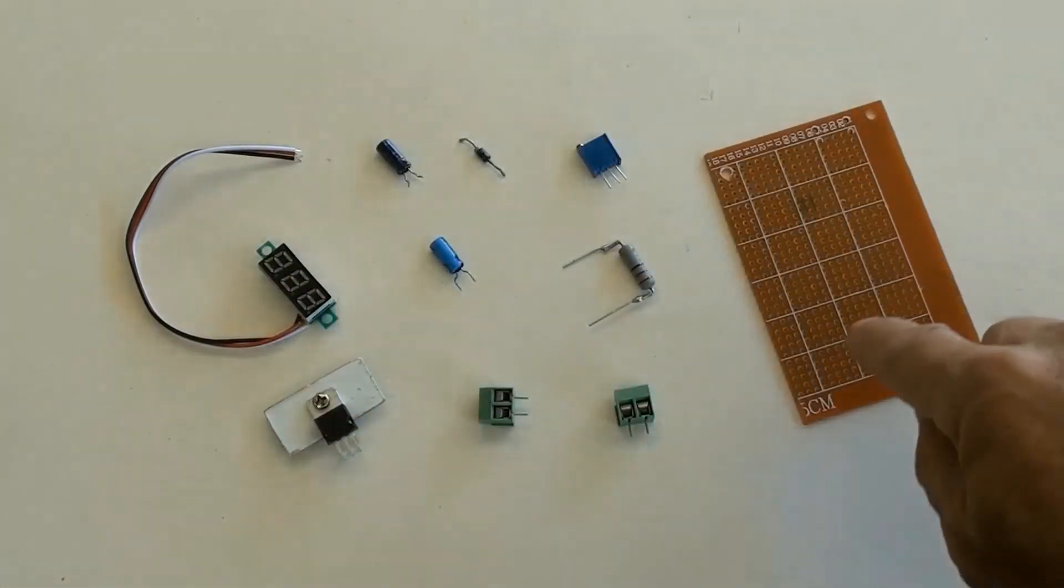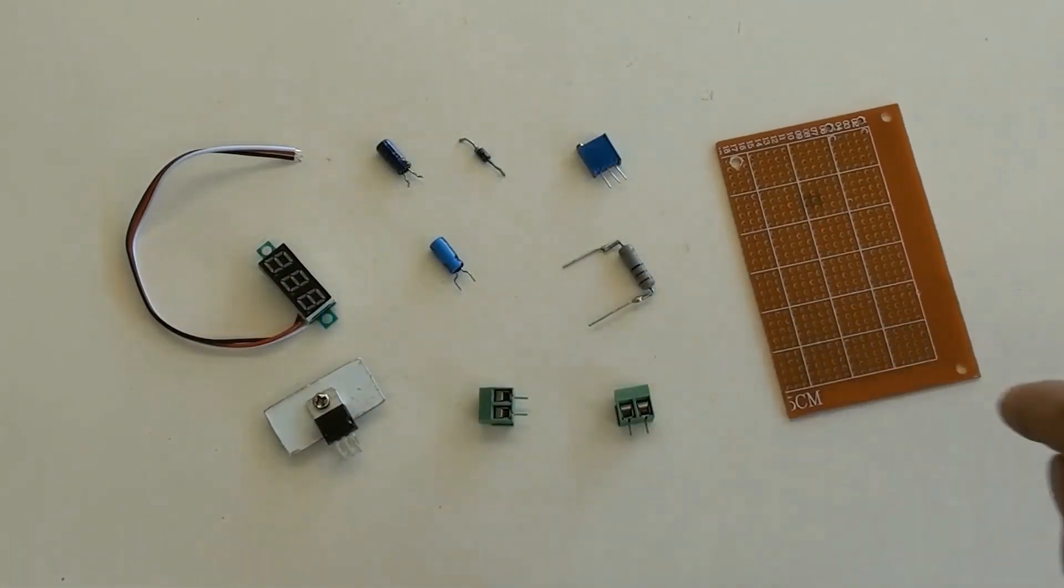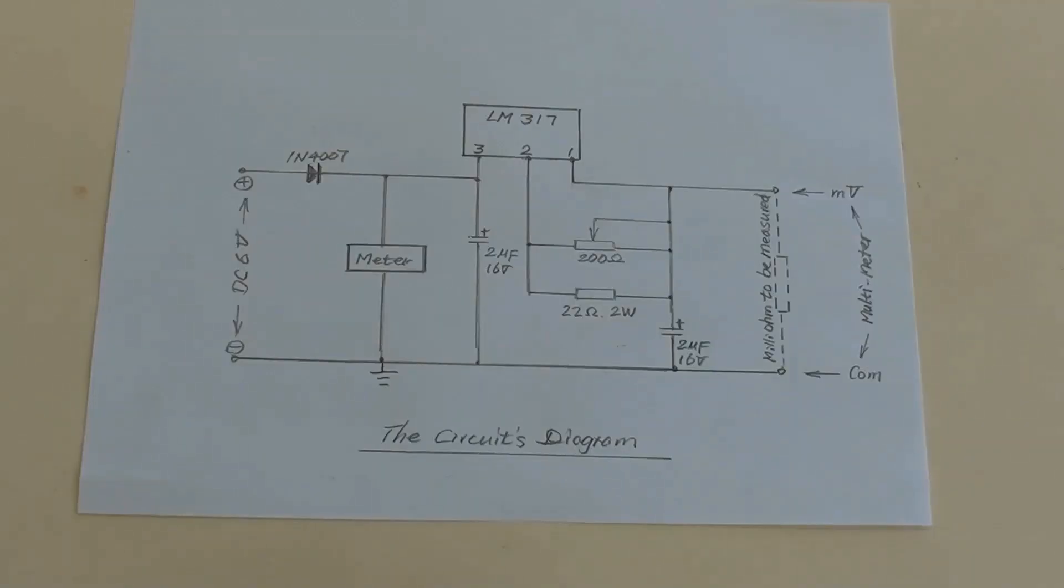This is the circuit diagram. In fact, this is the constant current circuit of LM317.